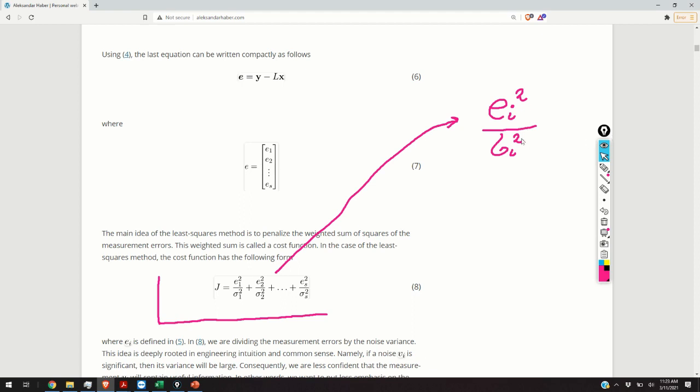To explain to you the importance of dividing the squares of the errors by the variances, I will construct the following scenario. For example, imagine that the observed variable yi is contaminated by noise, and imagine that the noise is significant. Consequently, these observed variables will be unreliable. And consequently, their errors will be presumably very large. Now, what do we want to do? In the cost function, we somehow want to incorporate that knowledge that the observed variable yi is not reliable. So, we need to scale down its square of the error.